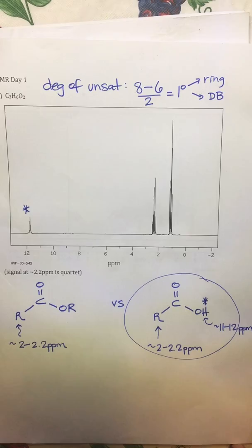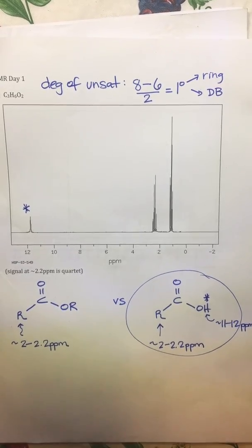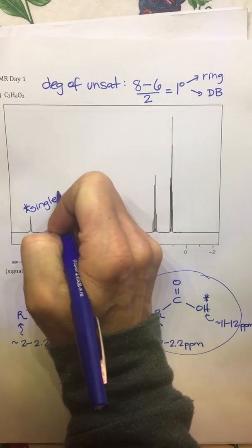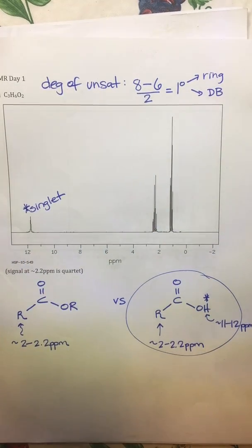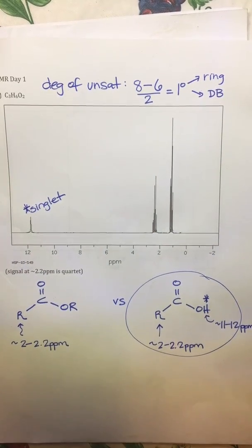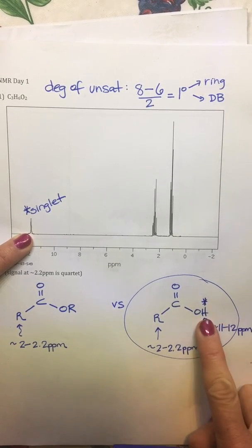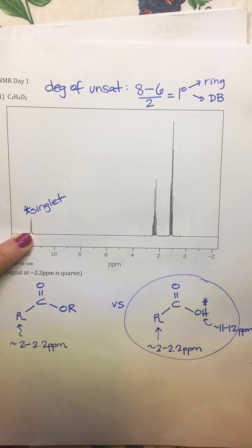So following our directions, we need to label what these are. So this right here is a singlet. A singlet means that the hydrogen or hydrogens giving this signal - and we know it is only one - has zero equivalent hydrogen neighbors.